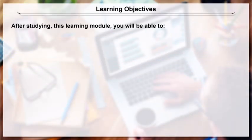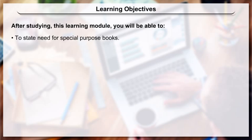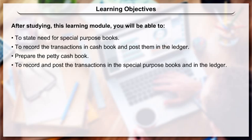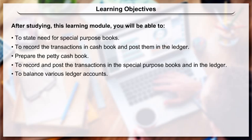Learning Objectives: After studying this learning module, you will be able to state the need for special purpose books, record transactions in the cash book and post them in the ledger, prepare the petty cash book, record and post transactions in the special purpose books and in the ledger, and balance various ledger accounts.